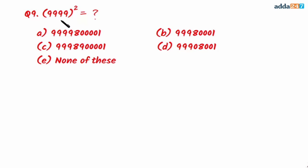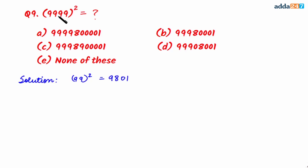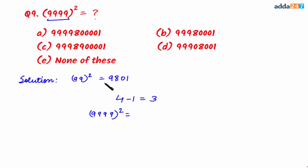Question number nine: find the square of 9999, where 9 is repeated four times. We quickly find 99² = 9801. Since 9 is repeated four times, we write 4 minus 1 = 3. The answer pattern is: 9 repeated three times, then 8 once, then 0, then 9 repeated three times, then 1 once. Looking at the options, B is correct.